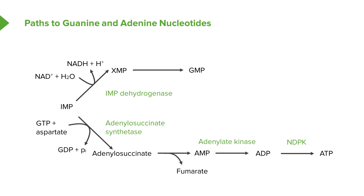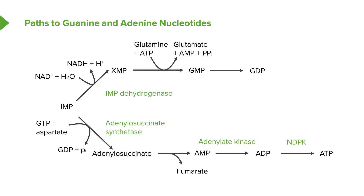XMP is converted into GMP, and that requires energy — in this case from ATP. ATP is cleaved into AMP, meaning it takes a lot of energy to make that happen. Pyrophosphate is split out in the process, and we also see glutamine being converted to glutamate — the transamination occurring right here. GMP is then converted into GDP by GMP kinase, and GDP is converted into GTP by NDPK.